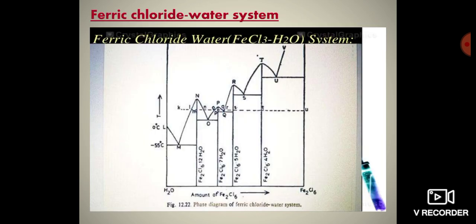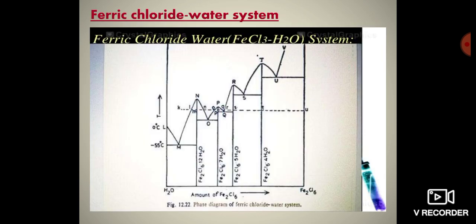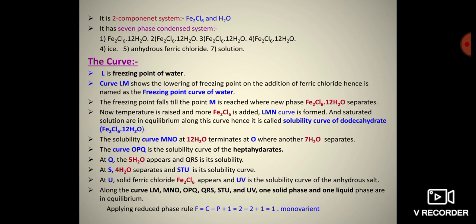The solubility curve MNO terminates at O, where 7H₂O separates. Curve OPQ is the solubility curve of the heptahydrate. At Q, the 5H₂O appears, and QRS is its solubility curve. At S, 4H₂O separates, and curve STU is its solubility curve. At U, solid anhydrous ferric chloride Fe₂Cl₆ appears, and curve UV is the solubility curve of the anhydrous salt.